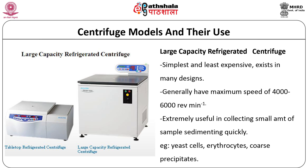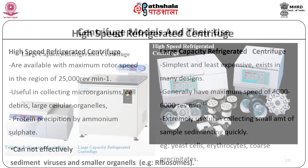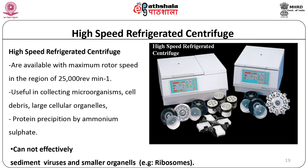The refrigerated centrifuge with large capacity has a maximum speed of 6,000 RPM and a refrigerated rotor chamber. Centrifuge tubes and their contents must be balanced, and the rotor must not be loaded with an odd number of samples. High speed refrigerated centrifuges are available with maximum rotor speeds in the region of 25,000 RPM. These are useful for collection of microorganisms, cell debris, and large cellular organelles. They can be used in protein precipitation by ammonium sulphate method but cannot effectively sediment viruses and smaller organelles like ribosomes.